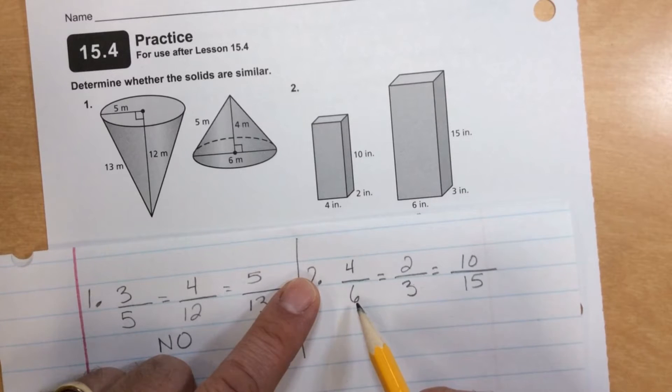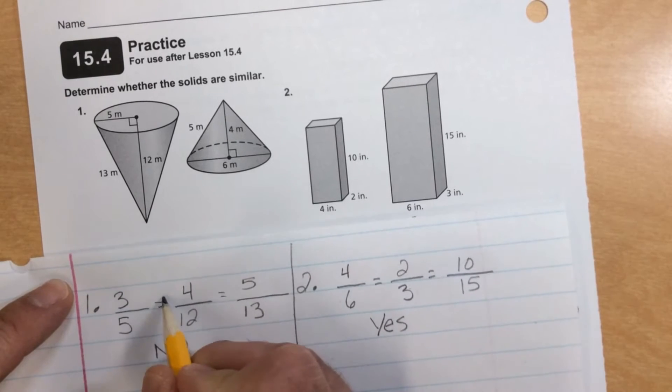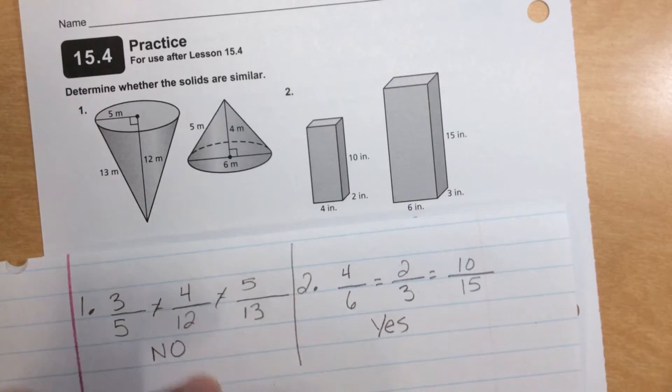And I can do cross products to see 12, 12, 30, 30. So that works out. Or I could see all of these simplify to two over three, two over three, two over three. So this is a yes, because their dimensions are proportional. These are proportional. Then that is yes, these are similar solids.